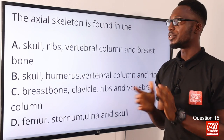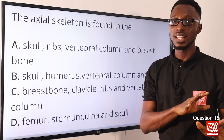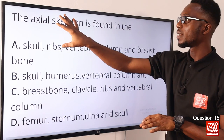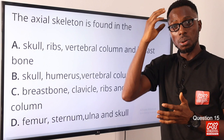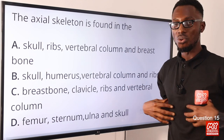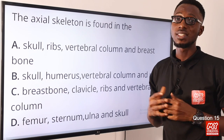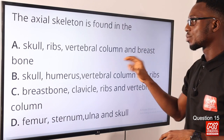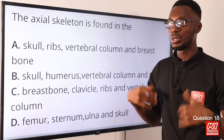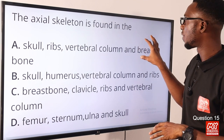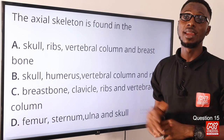Question fifteen: the axial skeleton is found where? The vertebral skeleton has an axial skeleton and an appendicular skeleton. The appendicular skeleton articulates into the axial skeleton. The axial skeleton is found in the skull, vertebral column, ribs, and the breastbone or sternum. The appendicular skeleton includes the limbs, shoulder, and hips. Option A is the correct answer — skull, ribs, vertebral column, and sternum.